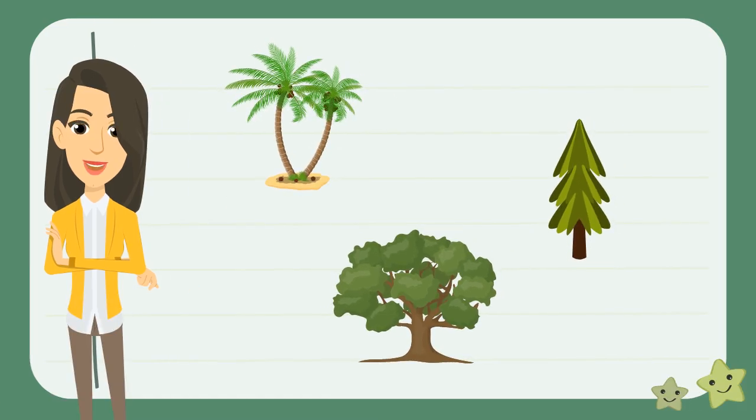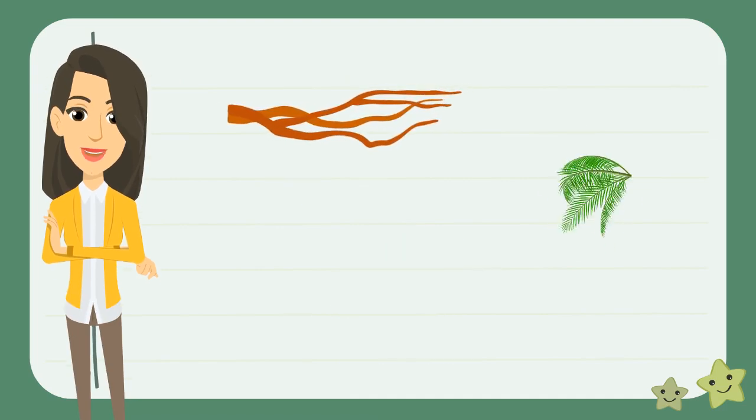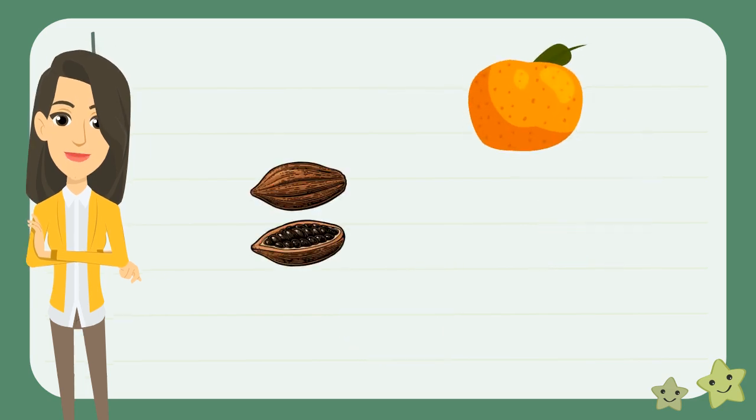These trees look different from each other, but they both have parts in common. They have twigs and branches and leaves. Some even have fruits, nuts, and flowers.